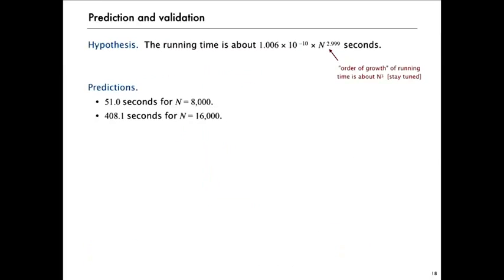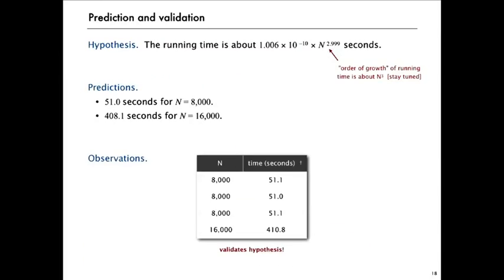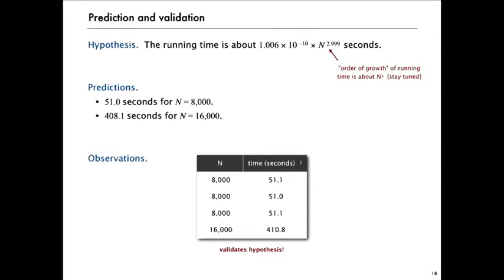And we can use that hypothesis to go ahead and make predictions. Just plug in for different values of N and it says it ought to take us 400 seconds for 16,000. Now 400 seconds is plenty of time but now we can go ahead and invest and run that experiment and sure enough we're pretty close to that 408 seconds when we run it. And now we can make a prediction for 32,000 or for whatever else we might be interested in. The model helps us do predictions without investing the expense to run the experiments.